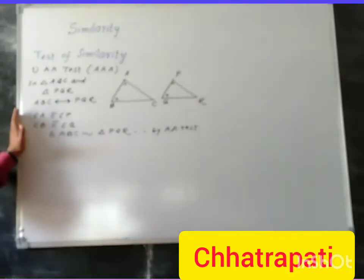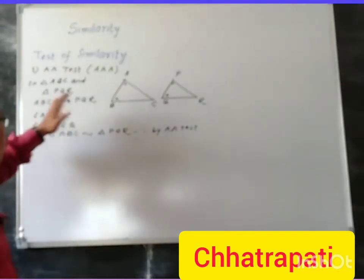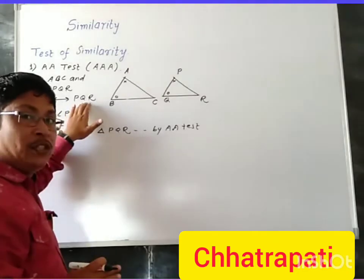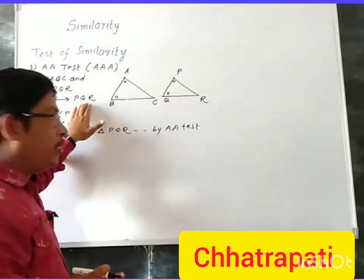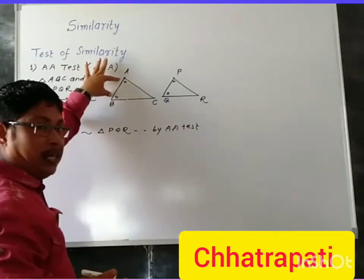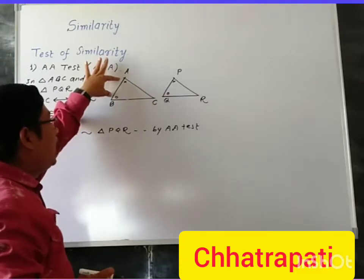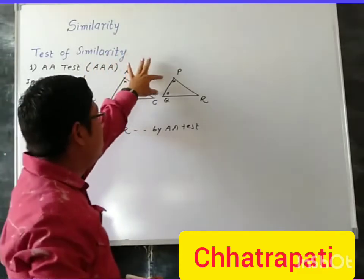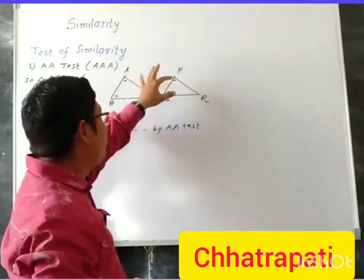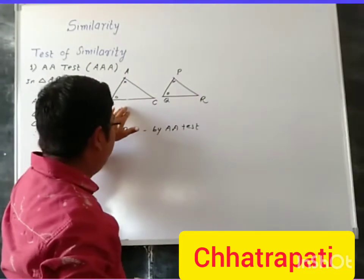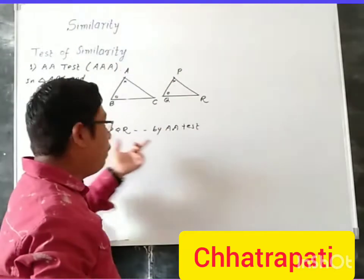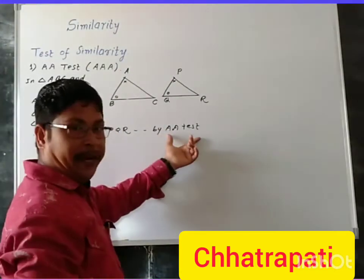So what is the AA test? For the given one-to-one correspondence between the vertices of two triangles, if two angles of one triangle correspond with the corresponding two angles of the other triangle, then the two triangles are said to be similar by the AA test.